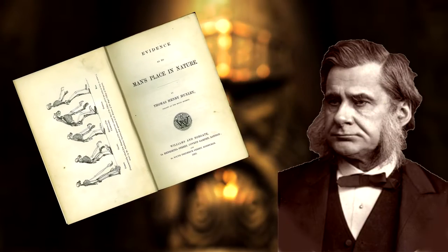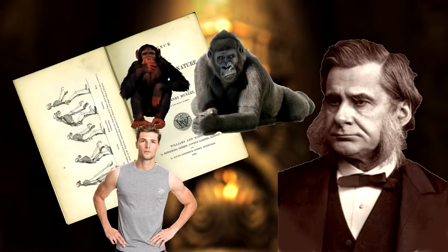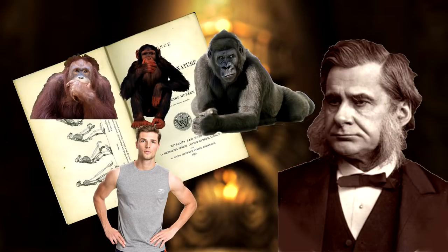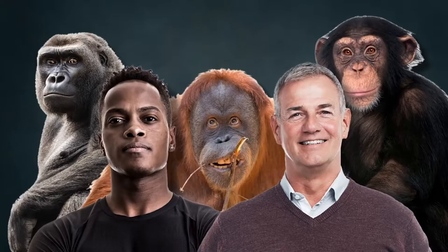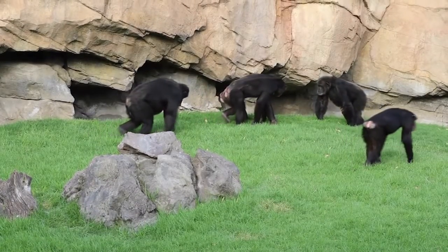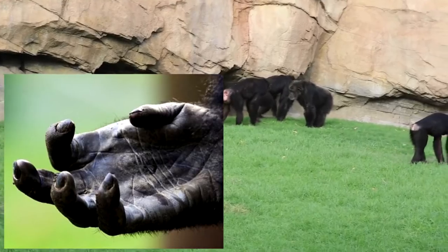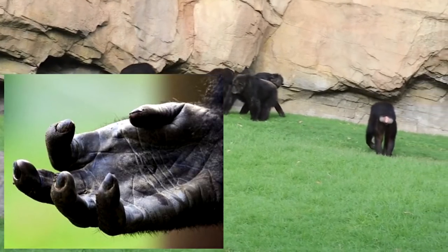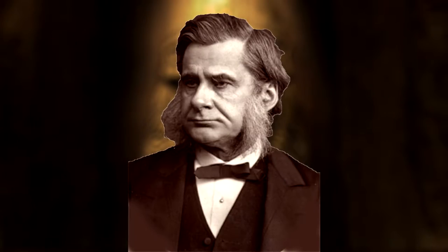Huxley's 1863 book Evidence as to Man's Place in Nature pointed out the anatomical similarities between humans and great apes like gorillas, chimpanzees, and orangutans. Like humans, apes have forward-facing eyes, large brains for the size of our bodies, and lack tails. The structure of our feet and hands are very similar, including fingernails instead of claws. To Huxley, these similarities suggested common ancestry between humans and great apes.